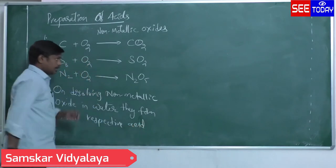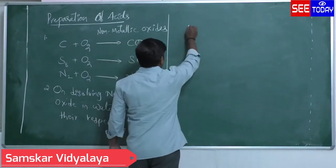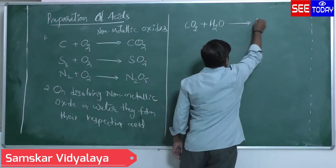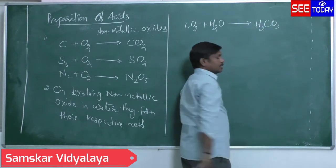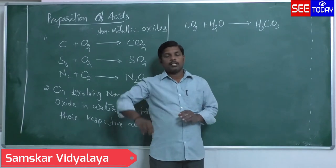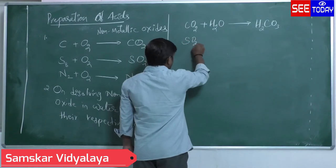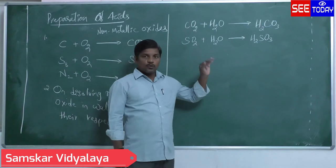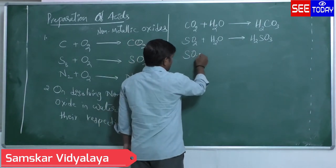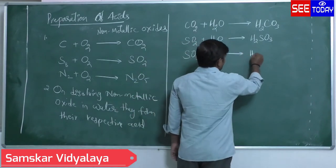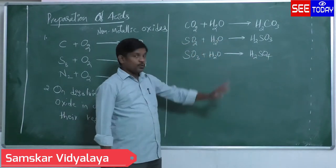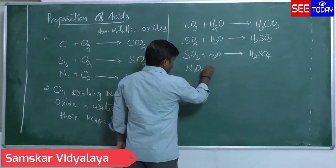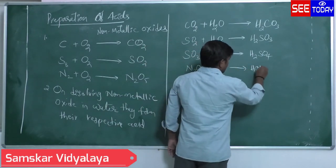For example, if you dissolve carbon dioxide in water, it forms H₂CO₃, which is called carbonic acid. Similarly, if you dissolve sulfur dioxide in water, it forms H₂SO₃, which is sulfurous acid. If you dissolve sulfur dioxide in water it forms H₂SO₄, that is sulfuric acid. Next, if you dissolve nitrogen pentoxide in water, it forms HNO₃, which is nitric acid.